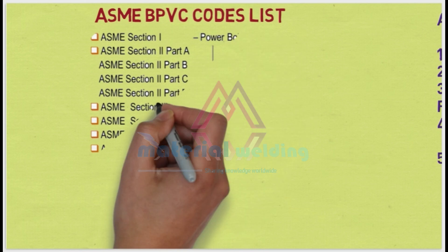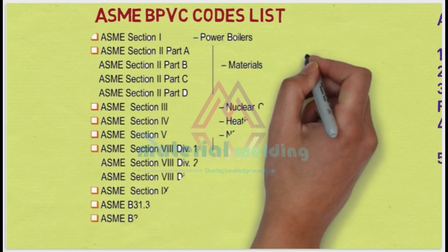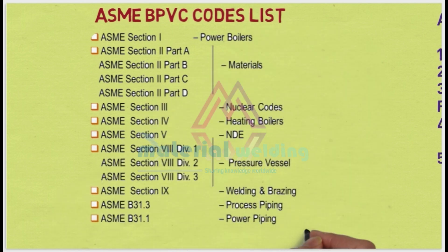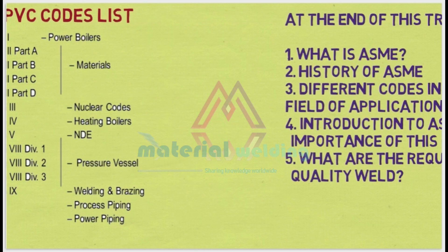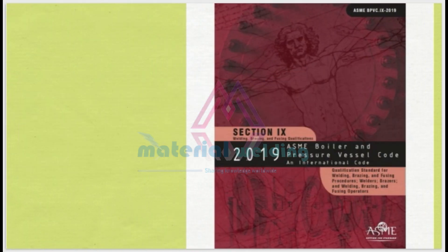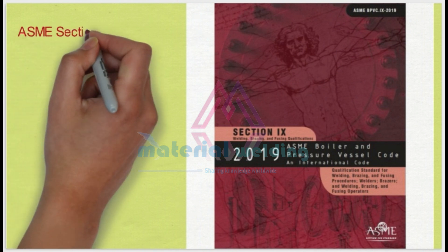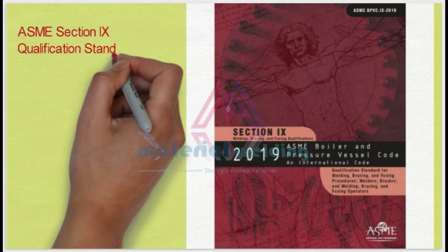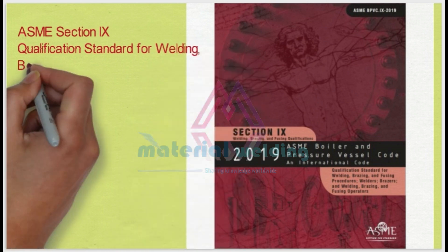The table here lists the ASME codes. We can see on the left-hand side the ASME code and on the right-hand side their applications. Here, Section 9 is for welding and brazing. ASME Section 9 is a qualification standard for welding, brazing, and fusing procedures.